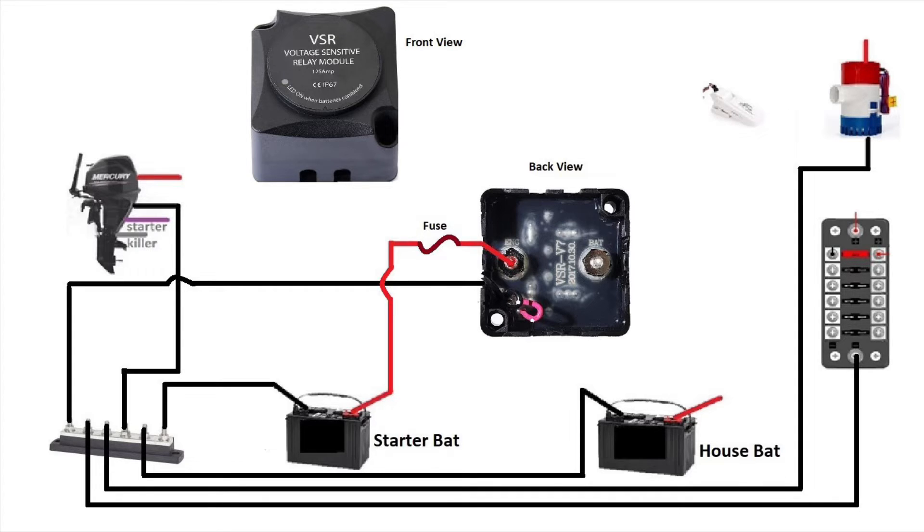And now we'll connect the other prong of the VSR. We'll take the positive of the house battery and connect it to the BAT prong of the VSR. Don't forget to add a fuse to protect your VSR.